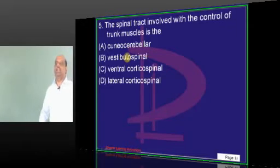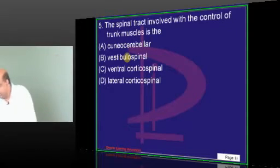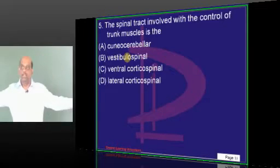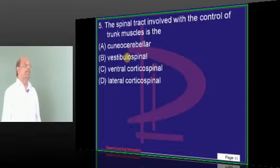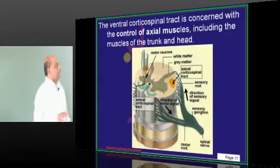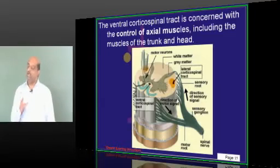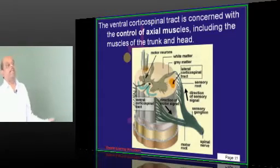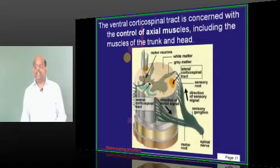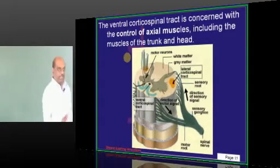Trunk muscles are controlled by the ventral corticospinal tract, which is responsible for controlling our trunk muscles. Appendicular muscles are controlled by a different mechanism. That is why we get truncal ataxias whenever there is any cerebellar dysfunction — truncal ataxias, titubation, etc.